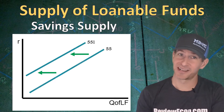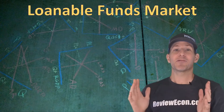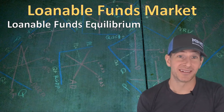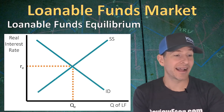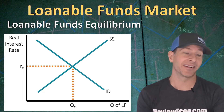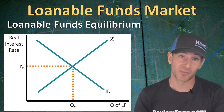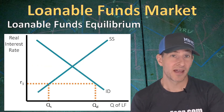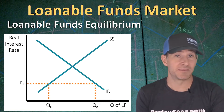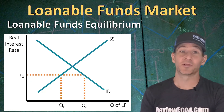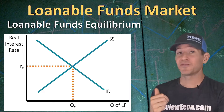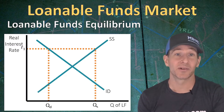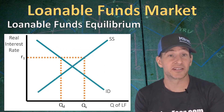These supply and demand curves function just like the supply and demand curves you've already learned about in this class. When we put both curves together on the same graph, we get the loanable funds equilibrium — with the equilibrium real interest rate (r_e) on the y-axis and the equilibrium quantity of loanable funds (Q_e) on the x-axis. When the real interest rate is below equilibrium, there's a shortage: quantity demanded is much greater than quantity supplied, so the real interest rate rises toward equilibrium. When the real interest rate is above equilibrium, there's a surplus: quantity supplied is much larger than quantity demanded, causing the real interest rate to fall back to equilibrium.